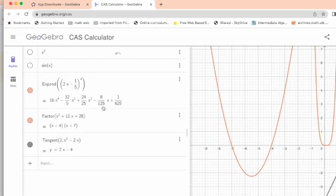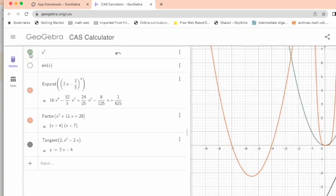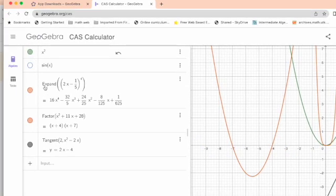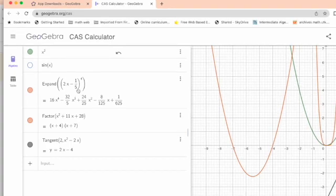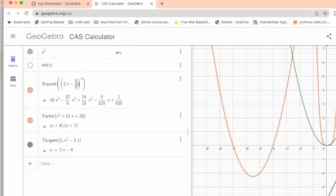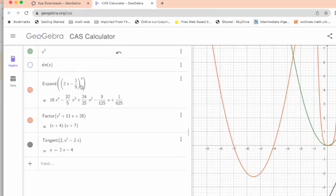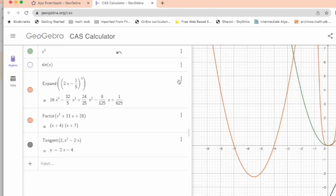For example, you can see here I can plot some graphs and I can see some of the expansions of binomial things. Look at this 2x minus 1 over 5 to the power 4. So it's super easy, you just need to, let me just show you again.